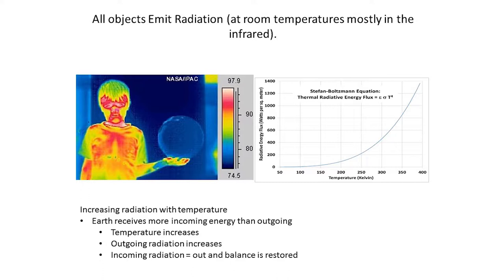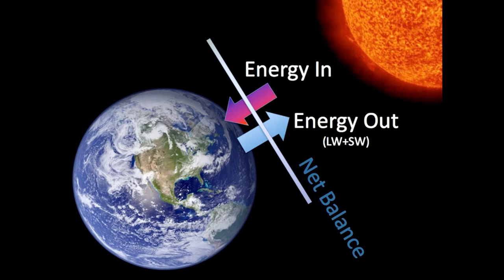All objects emit radiation, and at room temperature most radiation is emitted in the infrared. This shows a boy holding a ball, and he's emitting radiation from his surface — normally you can't see it unless you have an infrared camera. The amount of radiation an object emits increases with temperature. So if all of a sudden the Earth is getting more energy than it's emitting, the Earth would heat up. If the Earth heats up, the temperature increases, the outgoing radiation increases, and at some point the incoming and outgoing radiation are balanced.